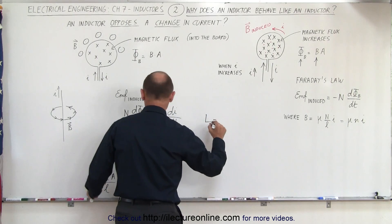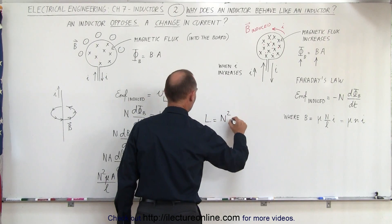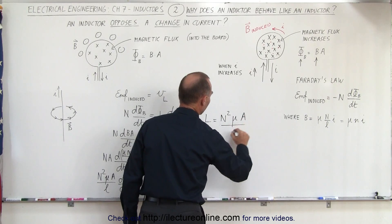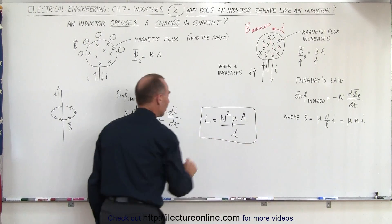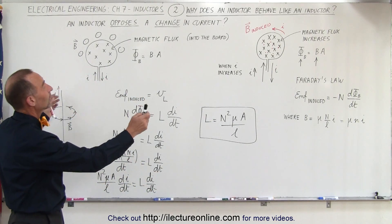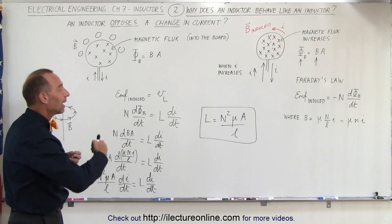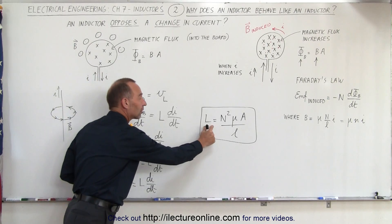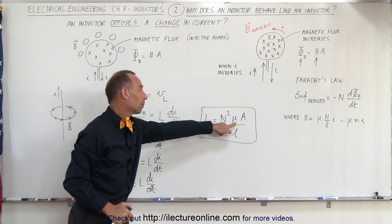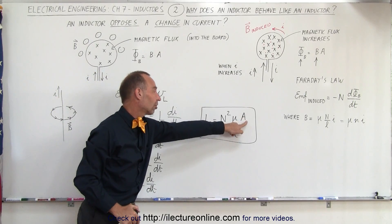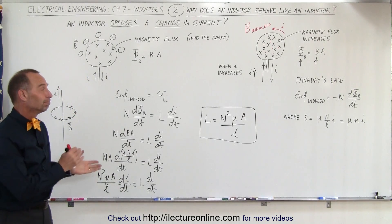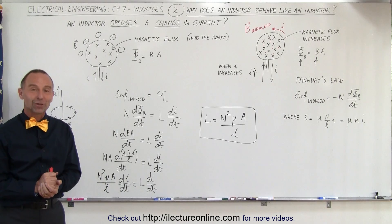The inductance L equals the number of loops squared, times the permeability of the core, times the cross-sectional area, divided by the length of the solenoid (L = N²μA/ℓ). This shows why an inductor does what it does — the inductance simply depends upon the physical structure: the number of turns squared, the permeability of the core, the cross-sectional area, and the length. That is why an inductor fights the change in current.